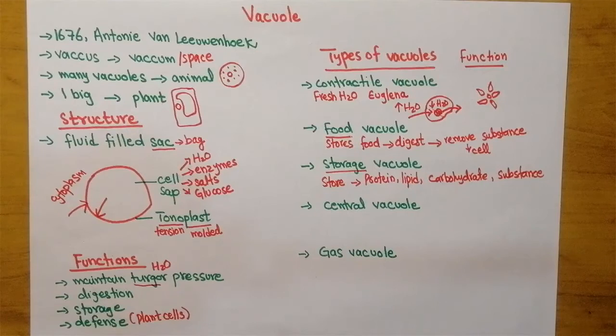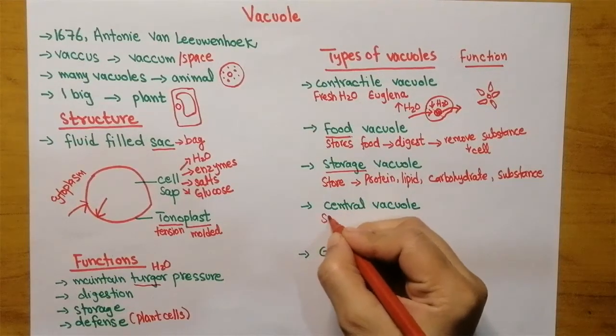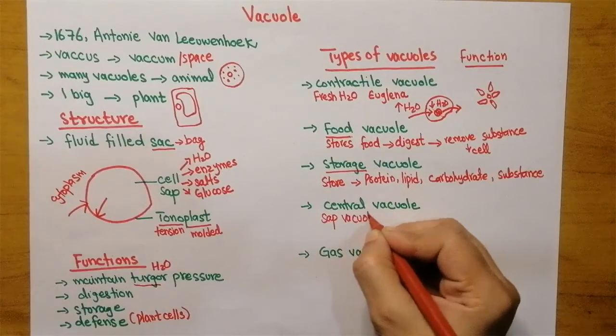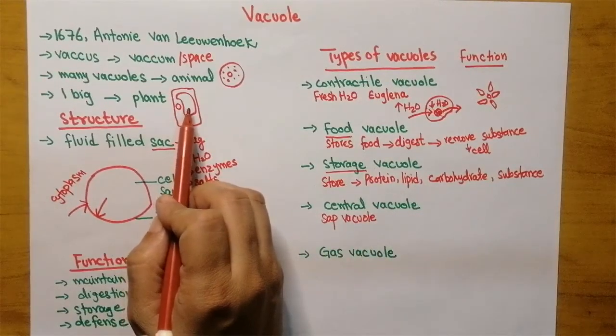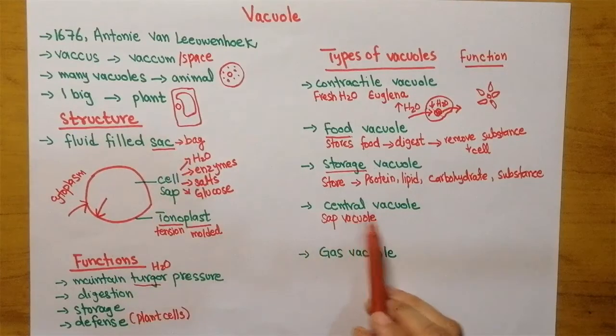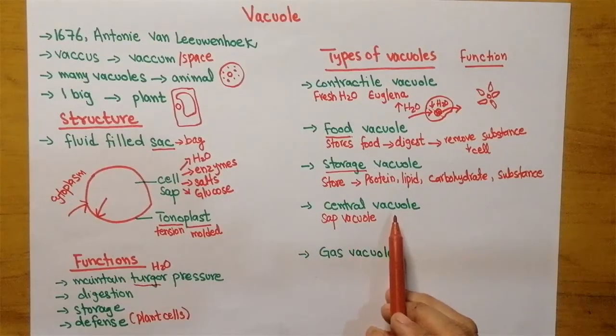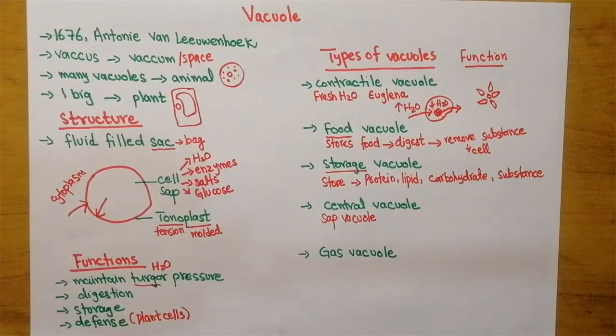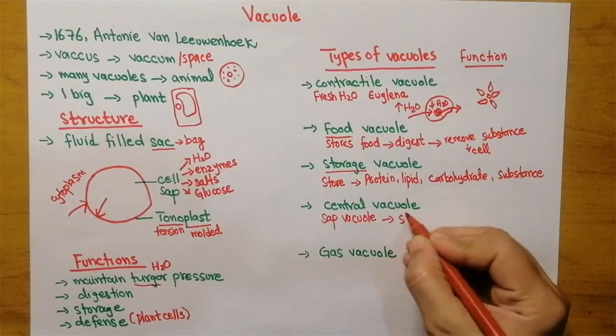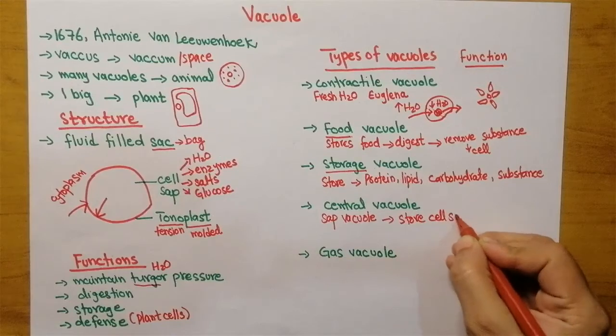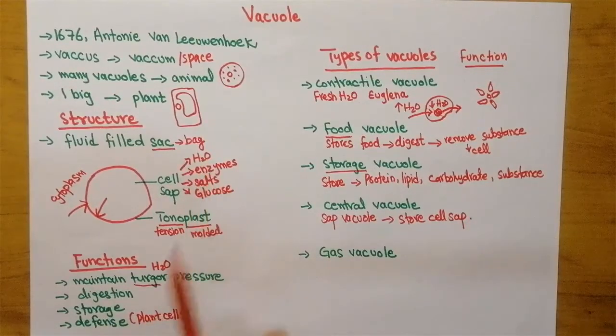Then comes the central vacuole, also known as sap vacuole. In the plant cell, this one big vacuole is actually known as central vacuole. The purpose of this vacuole is that it's going to store cell sap. Because of its position in the plant cell, it is known as central vacuole.